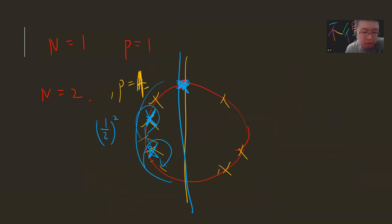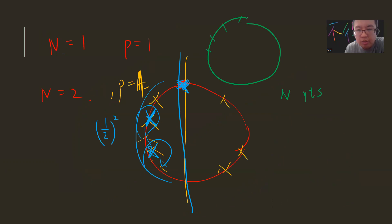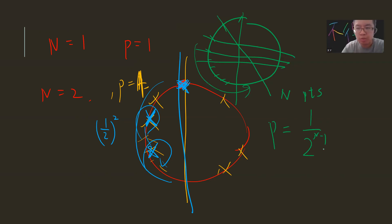Once you see this, for n points it's trivial. You can divide: either all n points are on the semicircle of the first one, or the second, or the third, and so on — all mutually exclusive. The probability for each is 1 divided by 2^(n-1), so the total answer is n divided by 2^(n-1).